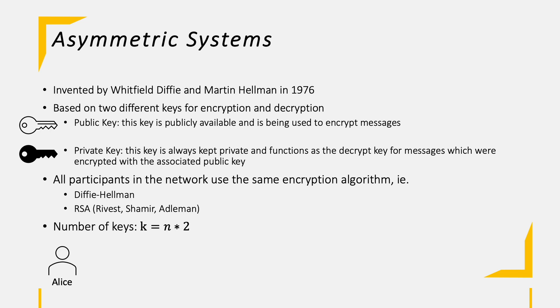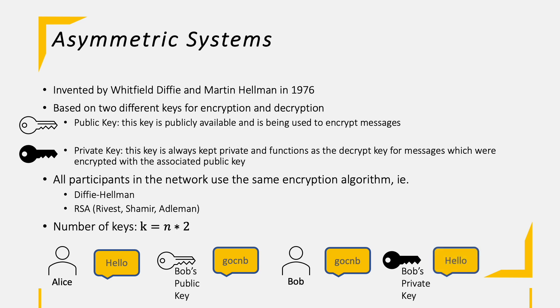Now let's run this through a high level example. Alice wants to send a message, hello, to Bob. And therefore she grabs his public key to encrypt the message. This encrypted message is sent to Bob, who ultimately takes his own private key to decrypt the ciphertext to eventually receive the hello message from Alice.